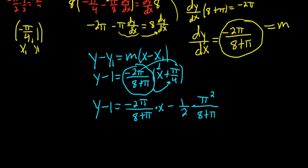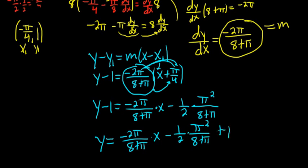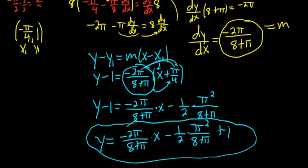And that's it. We just have to add the 1 now. So y equals negative 2 pi over 8 plus pi times x minus 1 half times pi squared over 8 plus pi, plus 1. Let me just look it over. Everything looks okay, it's just so crazy looking.